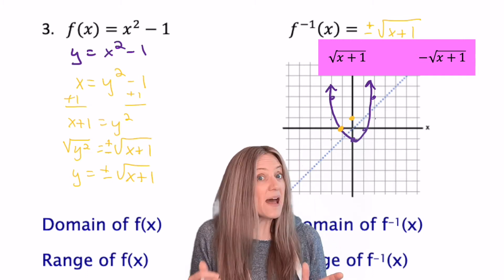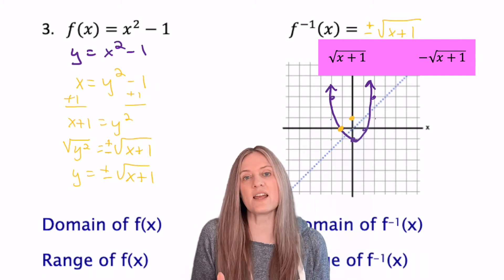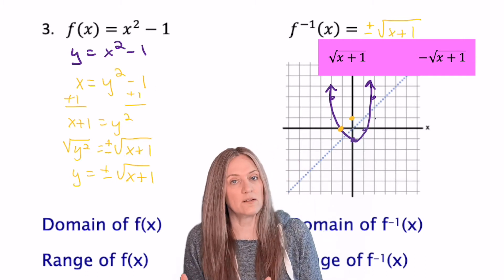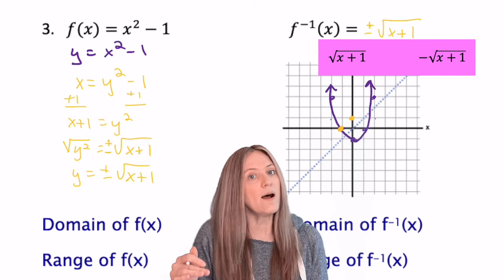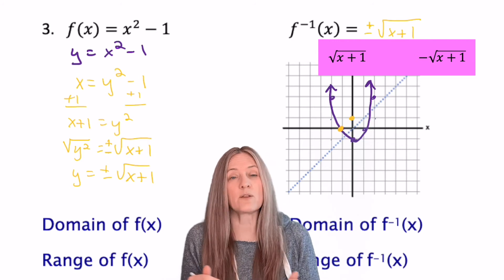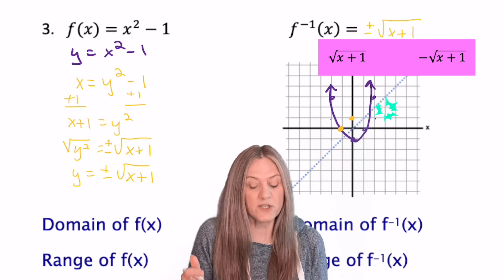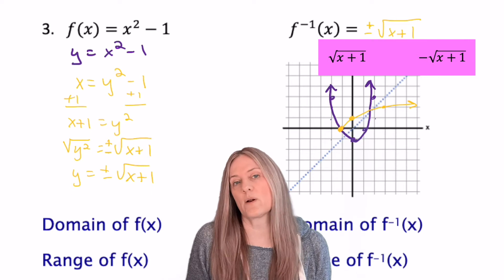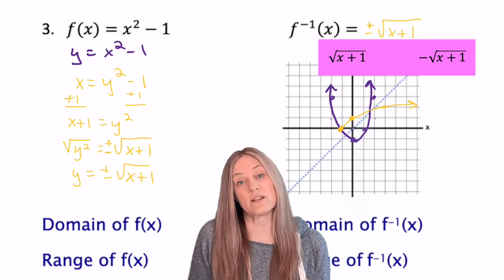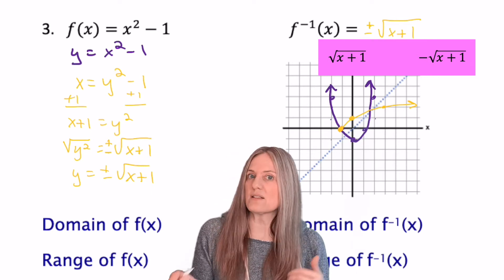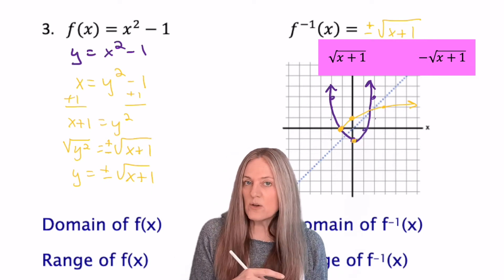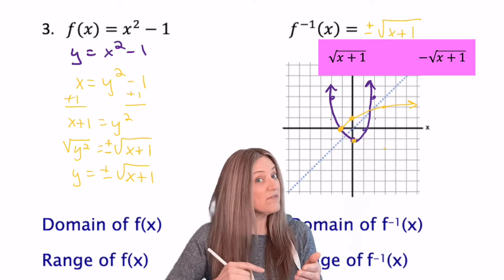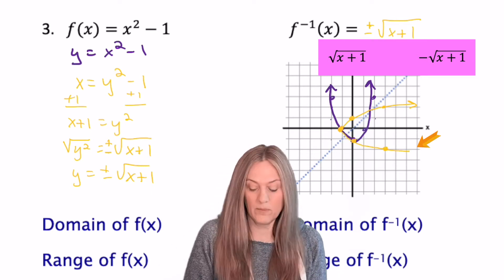To the right one, up one. To the right four, up two. Next, the negative square root of x plus one — same thing, translated to the left one unit, but now it's been reflected as well.